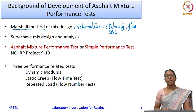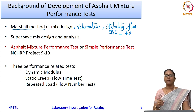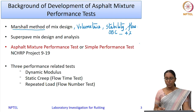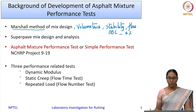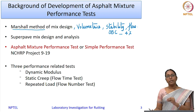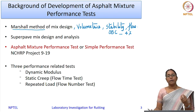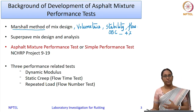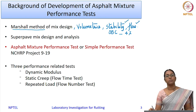The optimum binder content is decided based on a target air void of 4%, considering the volumetrics and also the stability and flow determined using the Marshall apparatus. However, what is lacking is that stability and flow are not directly correlated to the strength of the mix or its ability to resist deformation such as rutting and fatigue—these properties are not captured by stability and flow parameters.